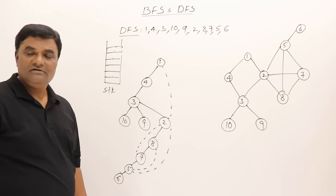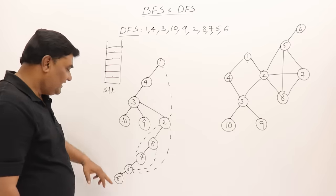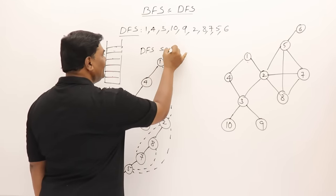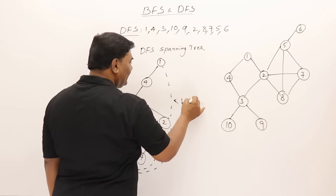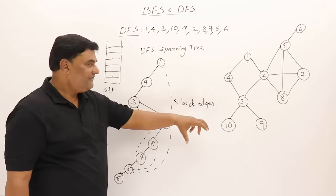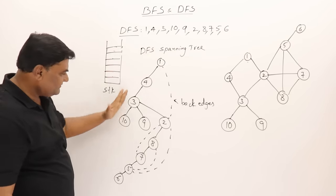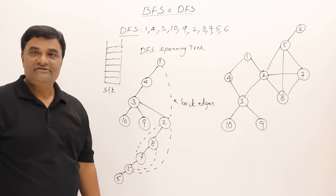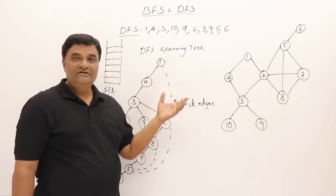That's all — the DFS traversal is complete. This tree formed is the depth first search spanning tree. The edges that were skipped are called back edges. For this graph we can perform pre-order on the DFS tree: 1, 4, 3, 10, 9, 2, 8, 7, 5, 6 — this matches the pre-order traversal, confirming that depth first search is like pre-order traversal.